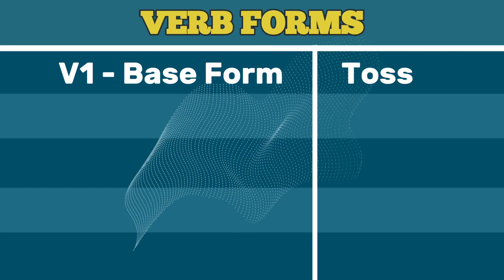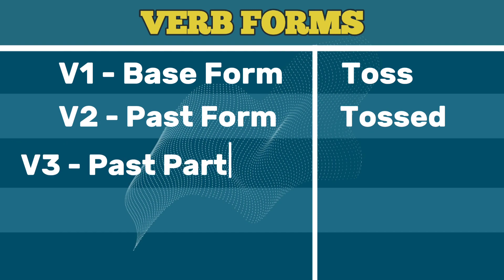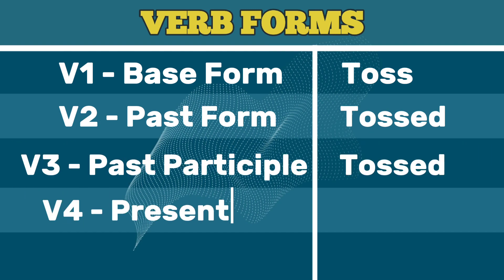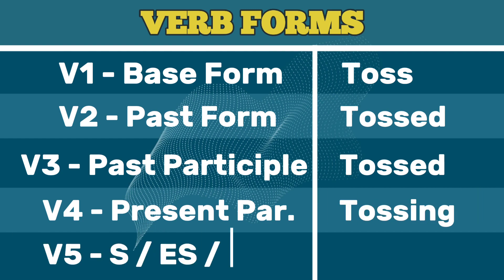V1 Base Form: Toss. V2 Past Form: Tossed. V3 Past Participle: Tossed. V4 Present Participle: Tossing. V5 Third Person Singular: Tosses.